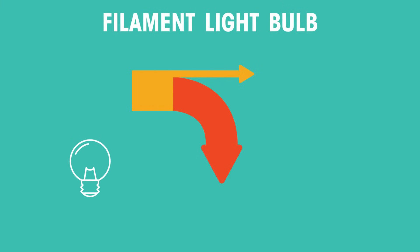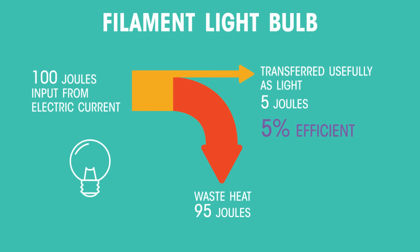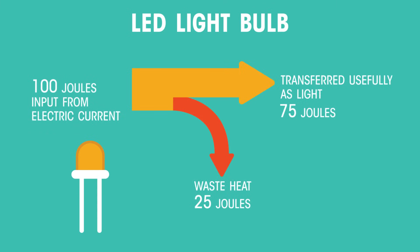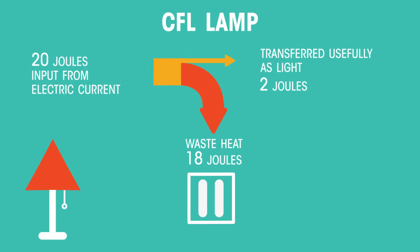The width of any boxes pointing downwards represents the amount of wasted energy. Let's look at light bulbs and work out how efficient they are. First, an old-fashioned filament bulb — only 5 out of 100 joules is useful, so it's 5% efficient. Now, LED — 75 joules are useful out of a hundred, so it's 75% efficient. That's why we are no longer using filament bulbs.